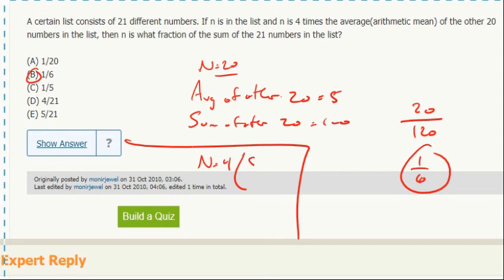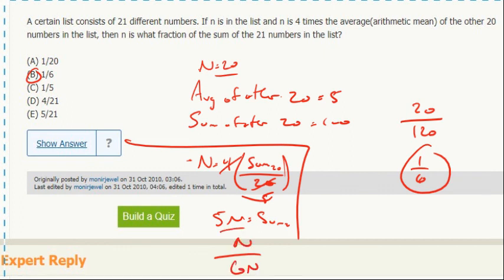So that's the sum of the 20 over 20, so then that cancels. That's 5, multiply by 5 over here. 5n equals the sum of the 20, so the sum of all the numbers is 5n plus n, and so it's n over 6n, and again, one-sixth.